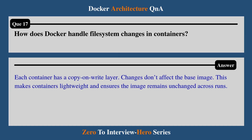Question 17: How does Docker handle file system changes in a container? Each container has its own copy-on-write layer. Changes don't affect the base image. This makes containers lightweight and ensures the image remains unchanged across runs.